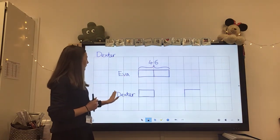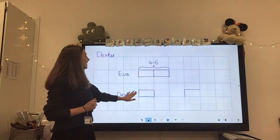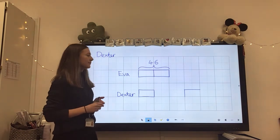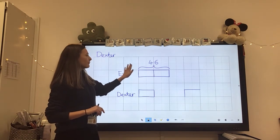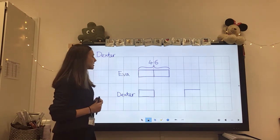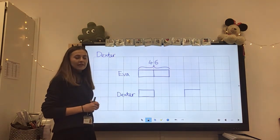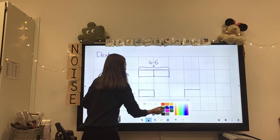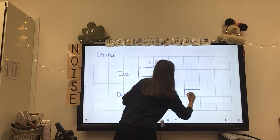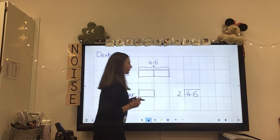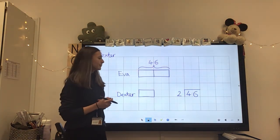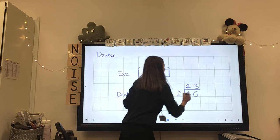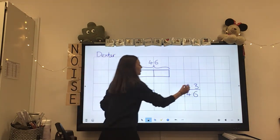So we know that Eva jumped twice as far as Dexter. Okay, so with my bar, I've got one block to show how far Dexter jumped. And then I've doubled that with two blocks to show how far Eva jumped. Because I know she jumped twice as far as Dexter. So we know that Eva's bar is equal to 4.6 metres. Okay. So I can use division to work out how far Dexter jumped. And if he jumped half as far, what do I need to divide by? Two. That's right. So, I'm going to write 4.6 here, divided by two. Okay, so how many times does two go into four? That's two. How many times does four go into six? That's three. Excellent. So I now know that Dexter jumped 2.3 metres.